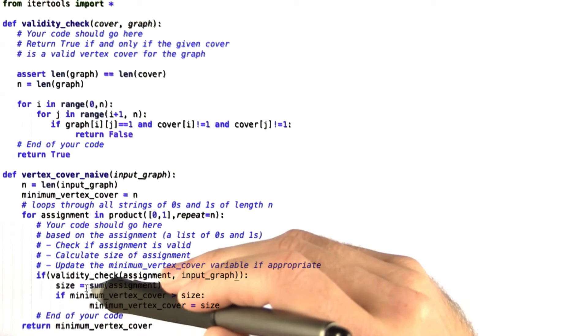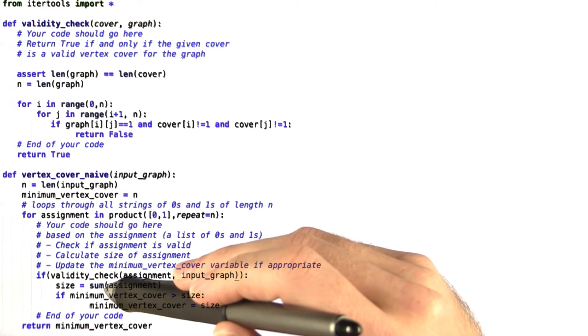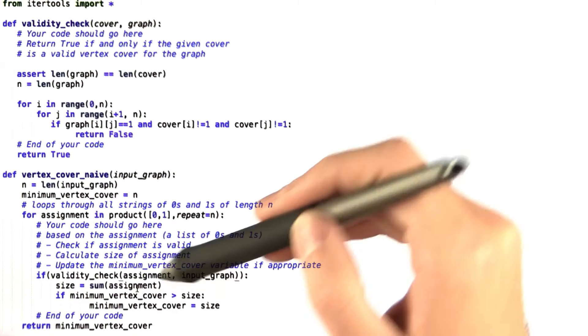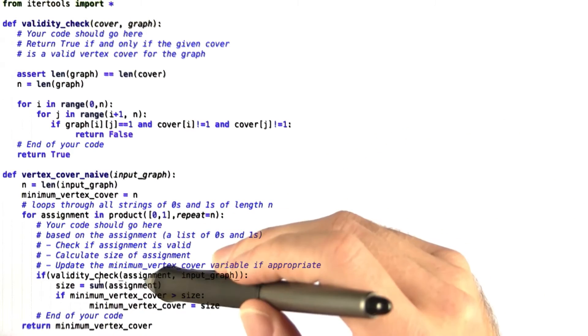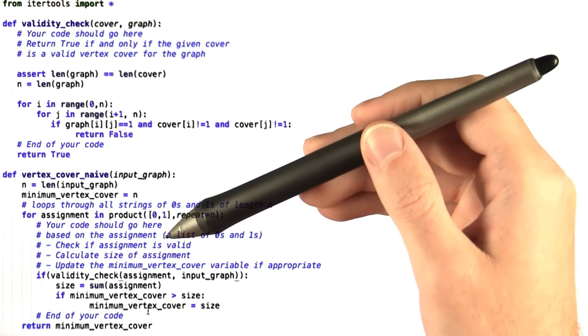then we set the size to be the sum of the number of ones in the assignment. So we add up all of the elements in that list, all of the zeros and ones.